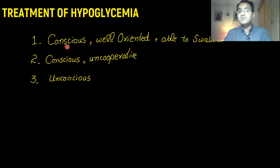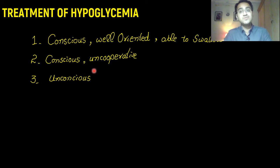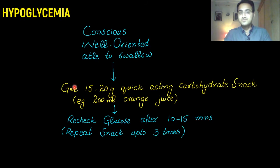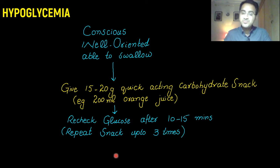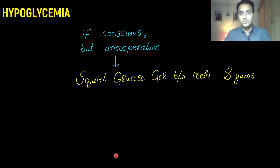There are three cases that can present to you. First, the patient is conscious, well-oriented, and able to swallow. Second, the patient is conscious but uncooperative. Third, the patient is unconscious. If the patient is conscious and able to swallow, you give 15 to 20 grams of a quick-acting carbohydrate snack — for example, 200 ml of orange juice — then recheck blood glucose after 10 to 15 minutes, repeating the snack up to three times.